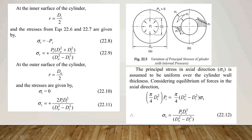In figure 22.5B, we see the variation of principal stresses. The principal stress in the axial direction, sigma-L, is assumed to be uniform over the cylinder wall thickness. Considering the equilibrium of forces in the axial direction, sigma-L equals PI times DI² divided by (DO² minus DI²).